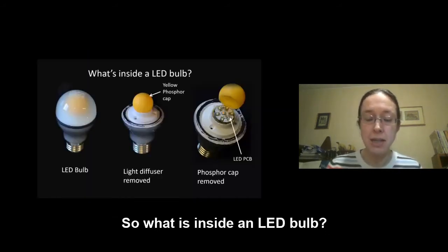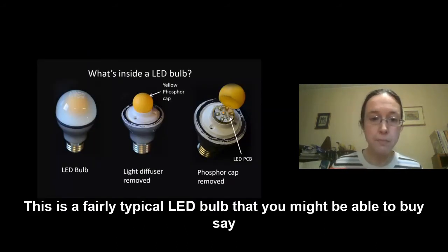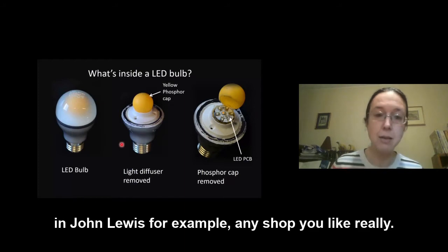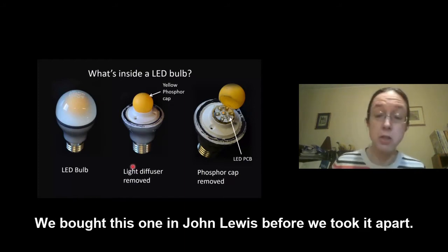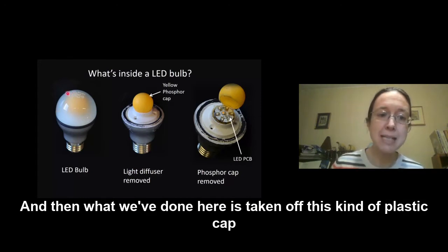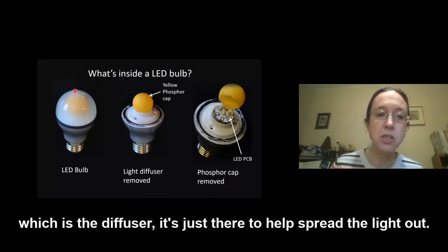Okay so what is inside an LED bulb? Well this is a fairly typical LED bulb that you might be able to buy in John Lewis for example, any shop you like really. We bought this one in John Lewis before we took it apart. And then what we've done here is taken off this plastic cap which is the diffuser, it's just there to help spread the light out.